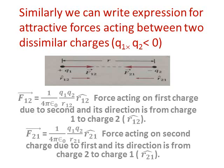And the value of F₁₂ vector will be equal to (q1q2/4πε₀r²) × r̂₁₂. Similarly, F₂₁ will be (q1q2/4πε₀r²) × r̂₂₁.